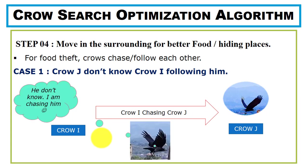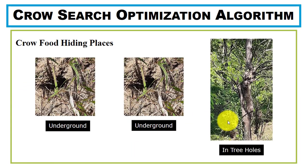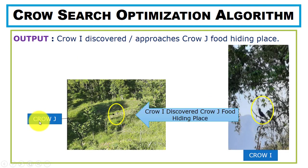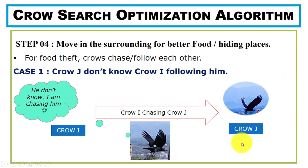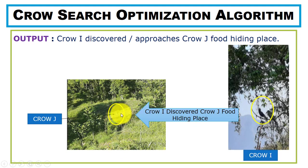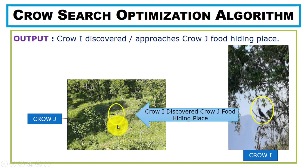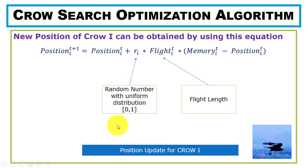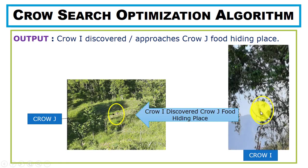Crows can hide food in different places such as underground or in tree holes. In the first case, crow j goes to visit its food hiding place while crow i is chasing it, unaware of being followed. Crow j reaches its hiding place — underground in this example — and crow i discovers crow j's food hiding place. This is the first scenario.